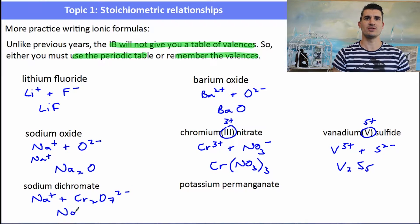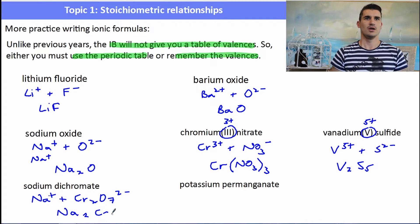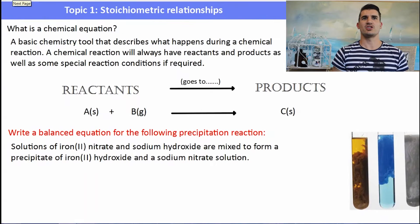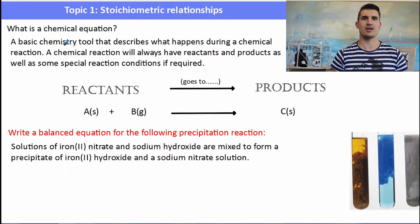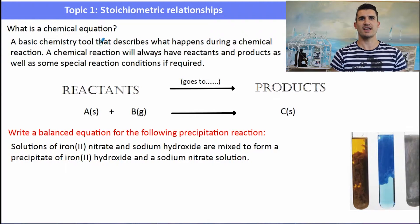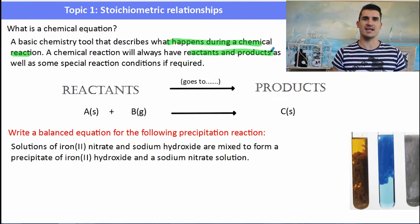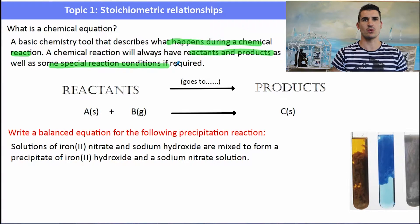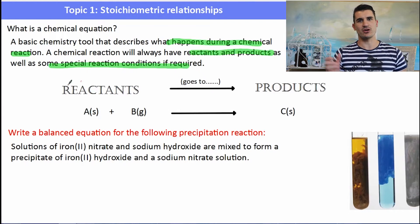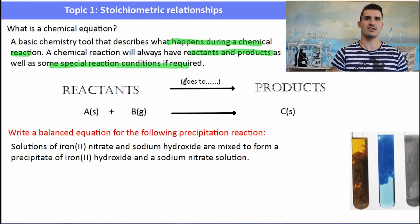A chemical equation is a basic tool for chemists that describes what happens during a chemical reaction. A chemical reaction always has reactants and products, and it might contain some special conditions if required. Reactants go on the left, with a 'goes to' arrow, and products go on the right.